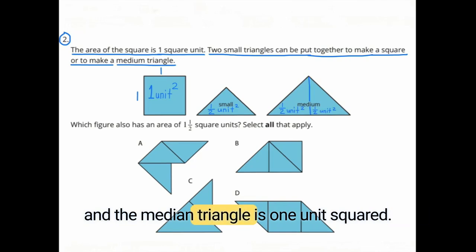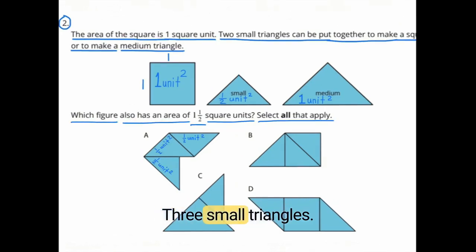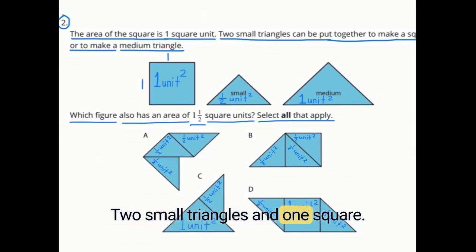And the medium triangle is one unit squared. Which figure also has an area of one and a half square units? Three small triangles, a medium triangle and a small triangle, or two small triangles and one square.